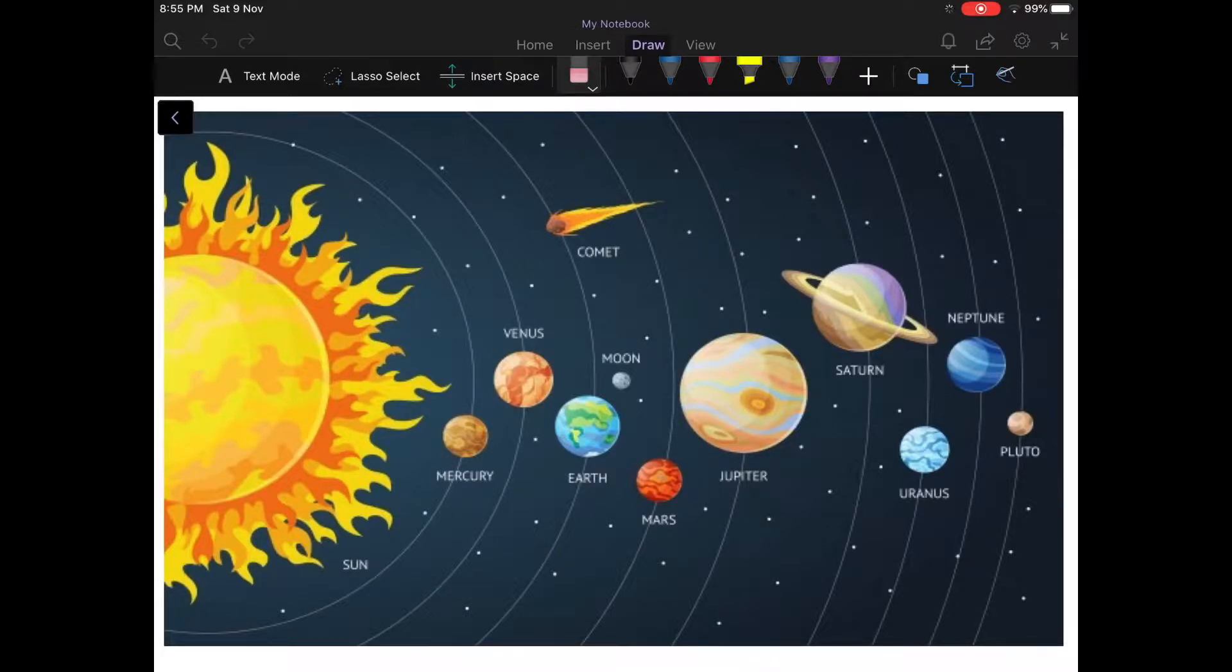In our solar system, the sun is at the center and all the planets revolve around the sun in an elliptical orbit. Starting with the planets, Mercury is the nearest planet from the sun. The second nearest planet to the sun is Venus.